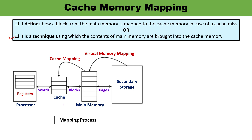Here you can see the mapping process. In this mapping process you can see there is a processor. It contains registers, cache memory, main memory, and secondary storage — which is the external storage. You can see there are various lines in the main memory. Main memory is divided into equal size partitions, known as blocks or frames.